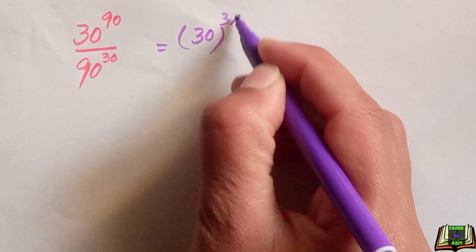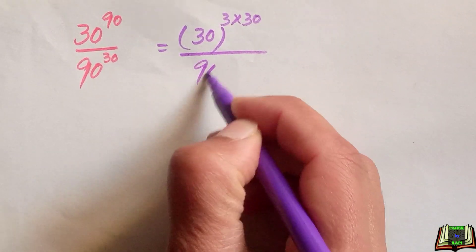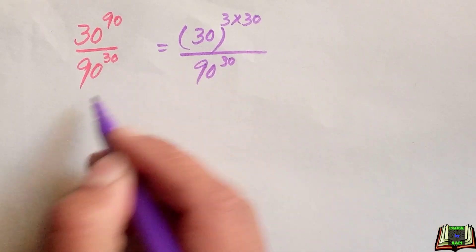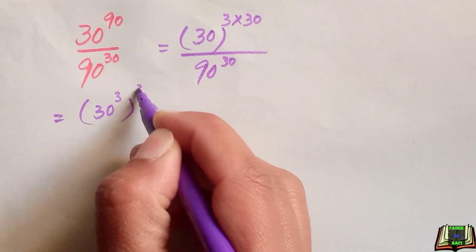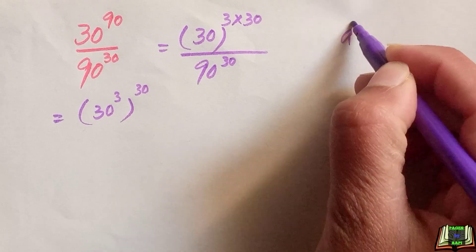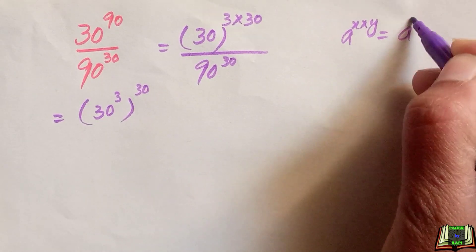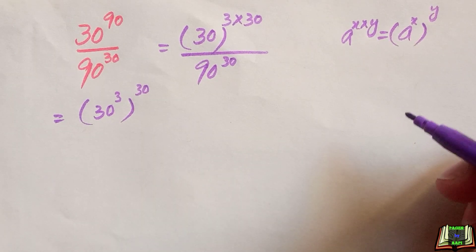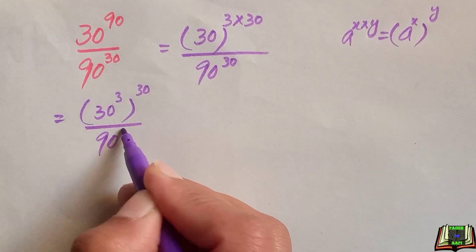30 raised to power 90 can be written as 3 times 30, divided by 90 raised to power 30. In the next step, we write this as 30 raised to power 3, whole raised to power 30, because we use the power of a power rule, which says a raised to power x times y can be written as a raised to power x, raised to power y. Divided by 90 raised to power 30.